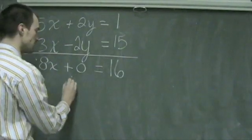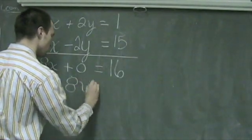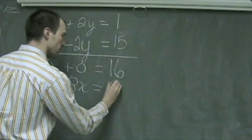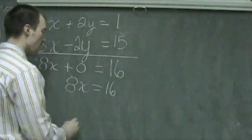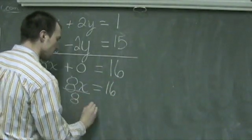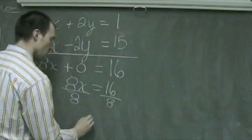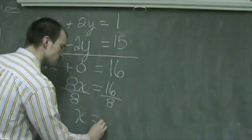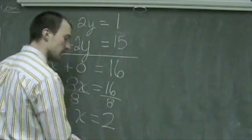8x plus 0 is simply 8x. Again this is set equal to 16, and dividing both sides by 8, we find ourselves with x being equal to a positive 2.